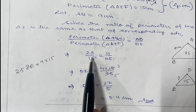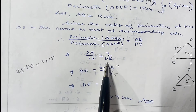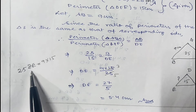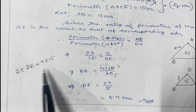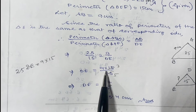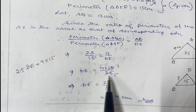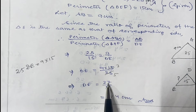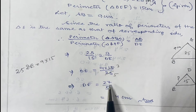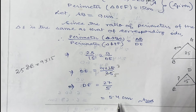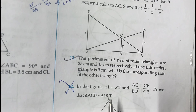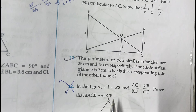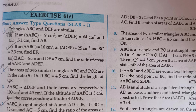Cross multiplying: 25 times DE equals 15 times 9, so DE equals 9 times 15 divided by 25. Simplifying: 5 divides into 25 giving 5, and 5 divides into 15 giving 3, so DE equals 9 times 3 divided by 5 equals 27 by 5 equals 5.4. Therefore the required length of DE is 5.4 centimeters. The rest of the sums in this exercise are not needed; though number 16 is in the syllabus, it is not so important for exam purposes. That's all for today — in the next video I'm going to start exercise 6E.